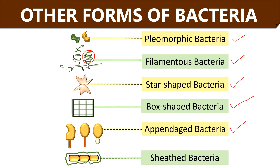Appendaged bacteria are characterized by some extensions, or outgrowths, that are generally in the form of stalks, hyphae, or buds. Sheathed bacteria like Sphaerotilus species have a rod shape and filamentous structure; they are mostly found in aquatic habitats and sludge, and they are surrounded by an outer covering called a sheath.